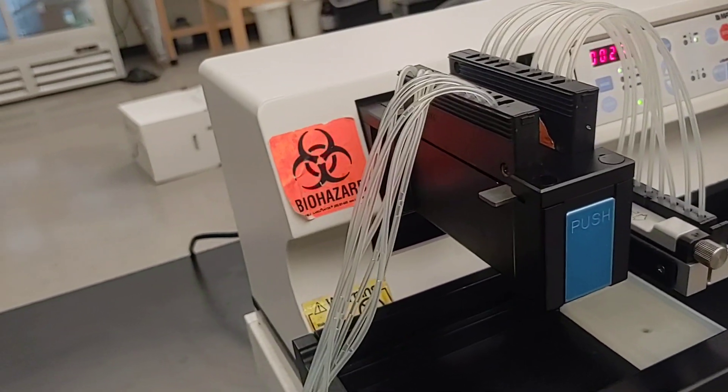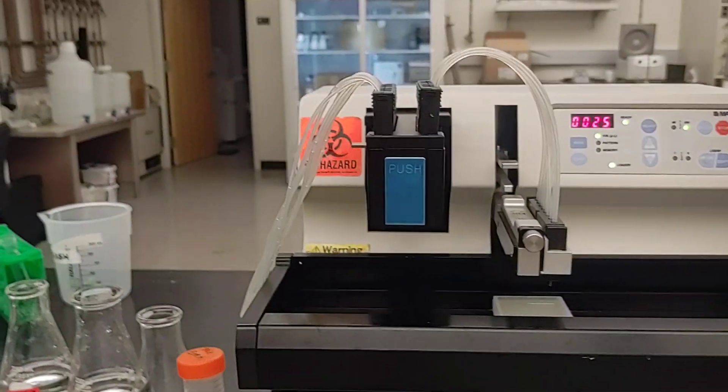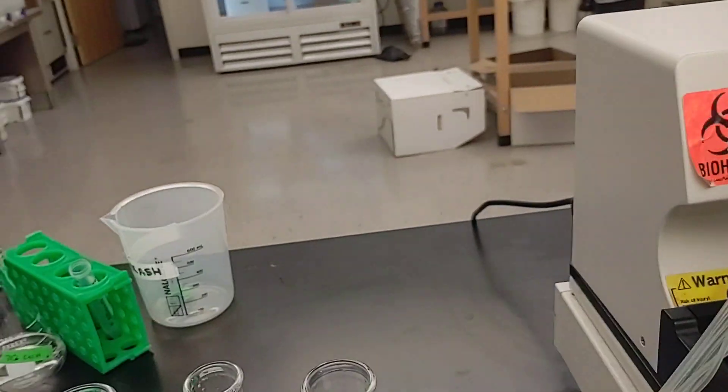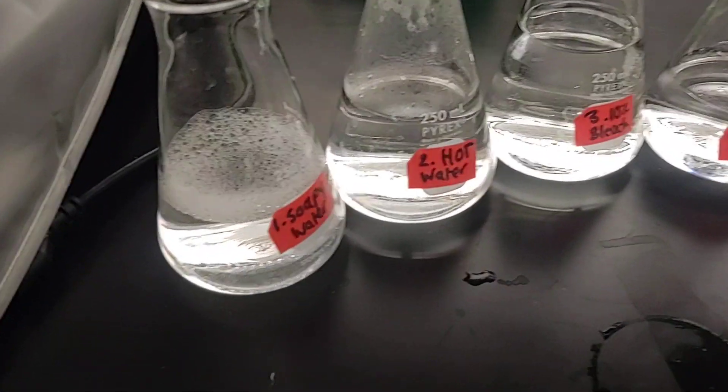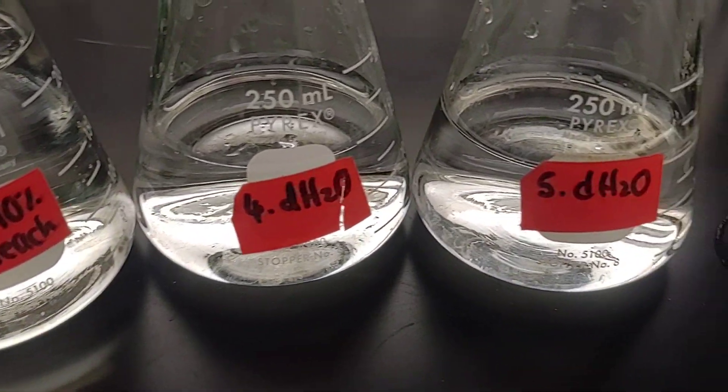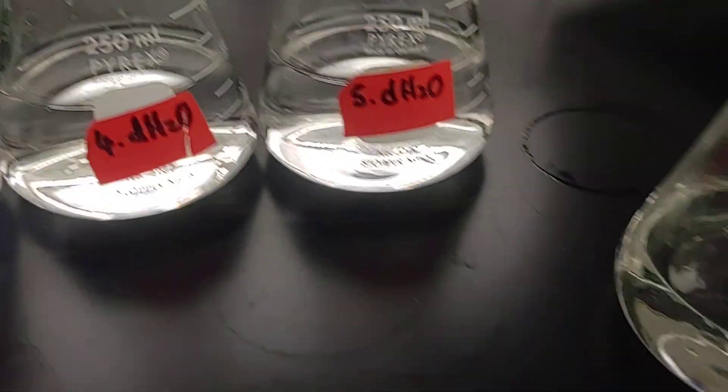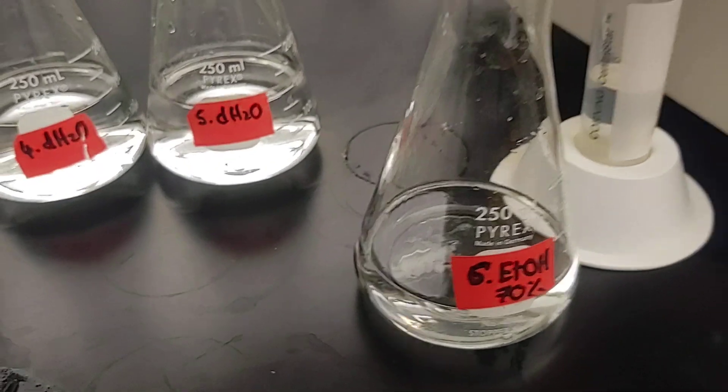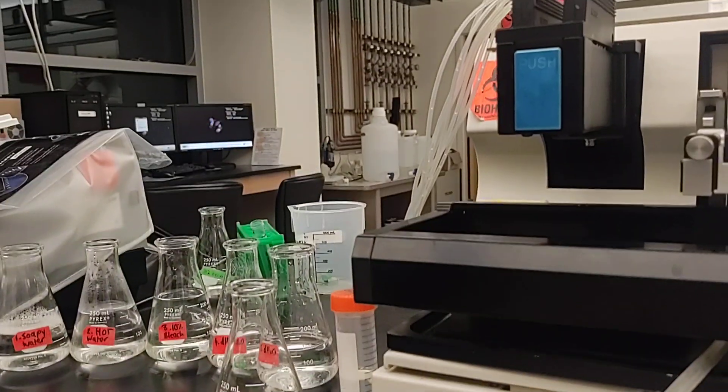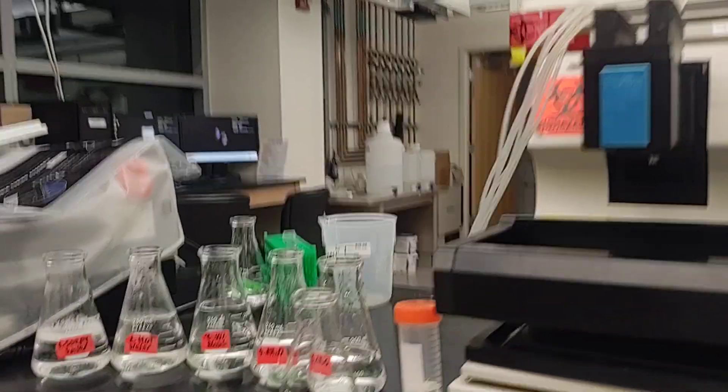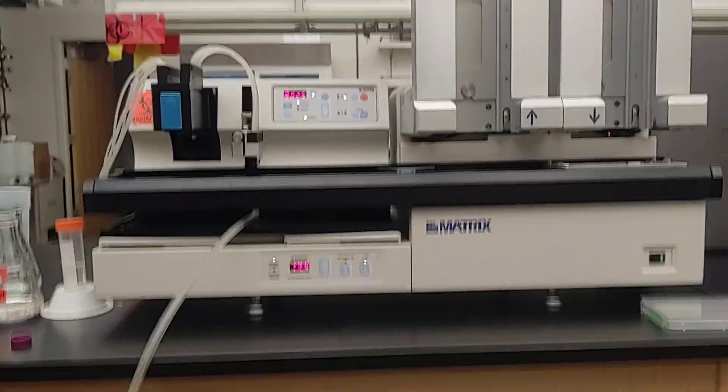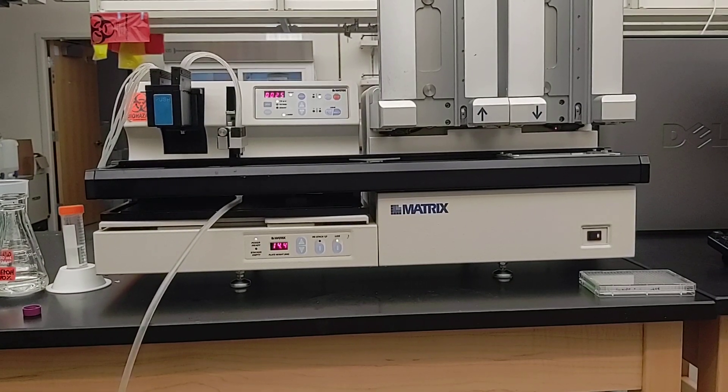And then normally you would have a sequence of solutions for washing the cassette. I usually do soapy water, hot water, bleach, two rounds of deionized water, and then ethanol. And I'll show you how to do that.